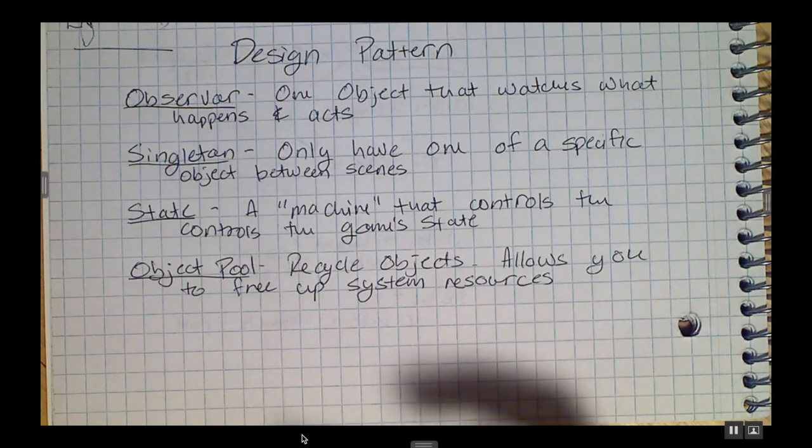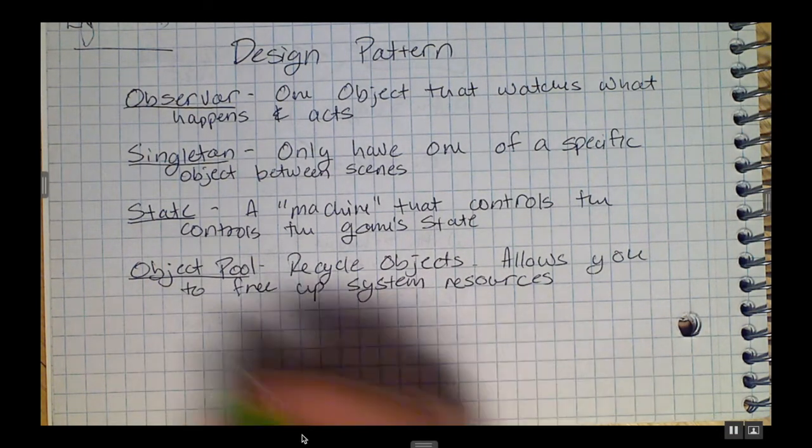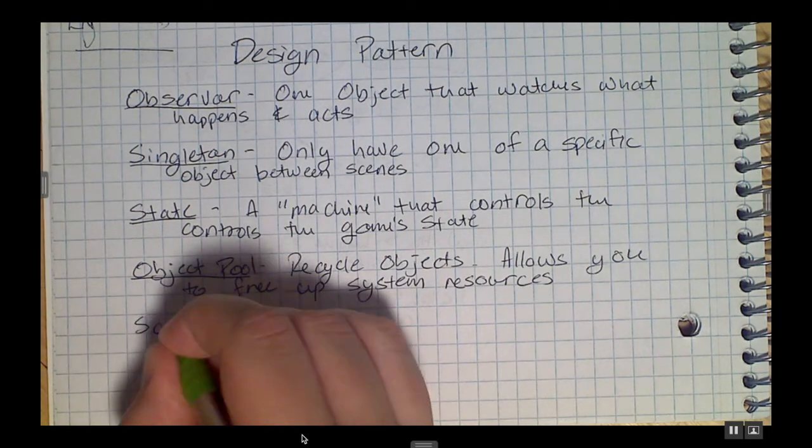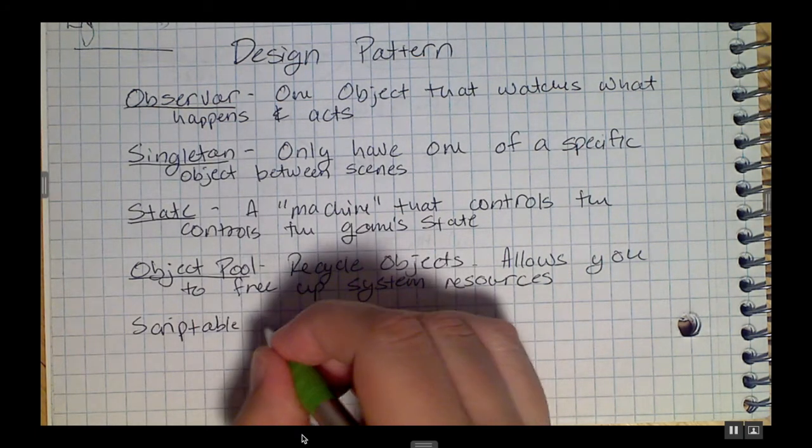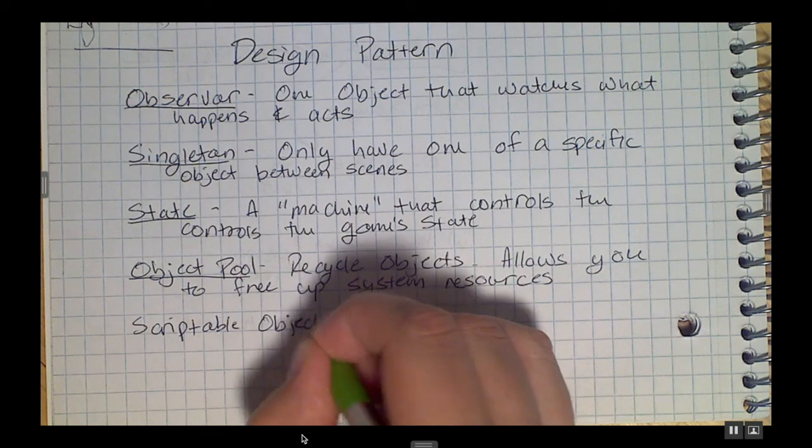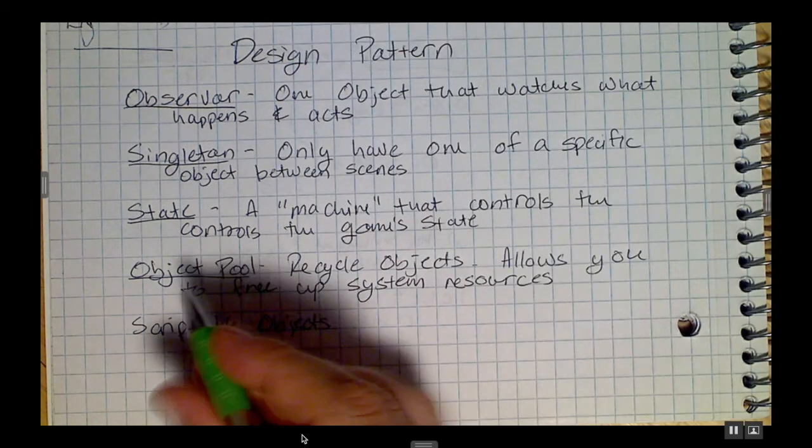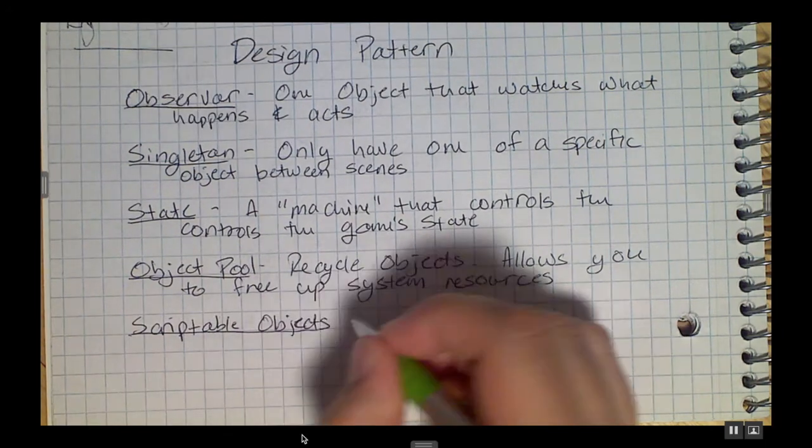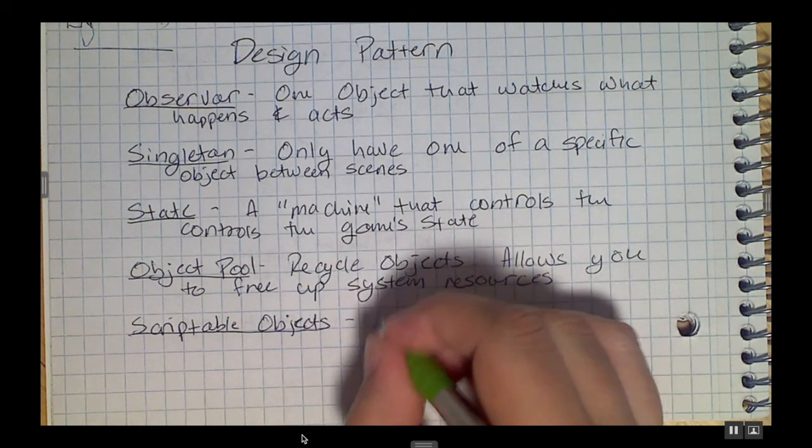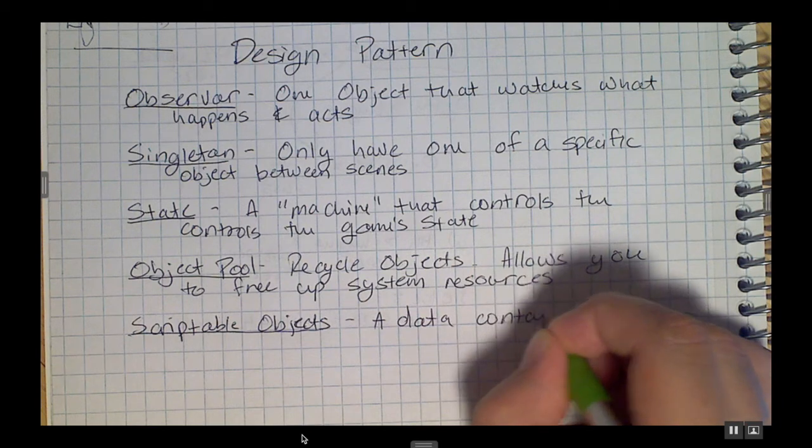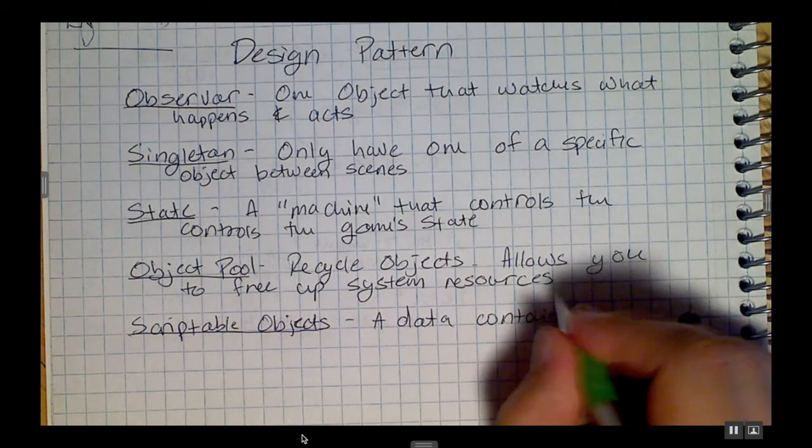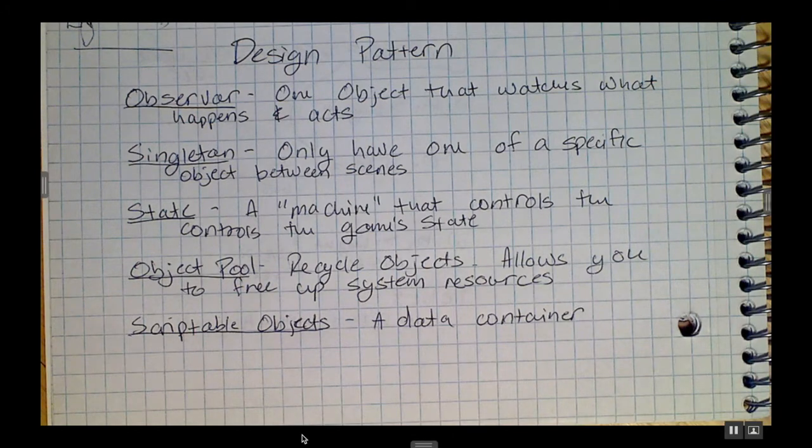The last one I want to talk about is unique to Unity, and I call it the scriptable object pattern. There's a couple really good Unity videos about this, about how to use scriptable objects in place of singletons. A scriptable object in general is just like a data container, however it doesn't have to just be a data container. It can be used not just to contain data, but also methods or functions or characteristics that you want specific items to have.